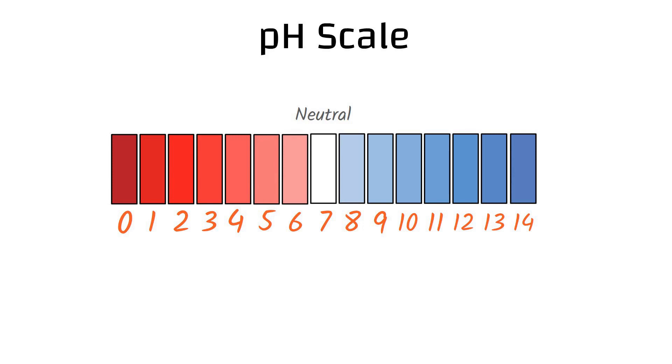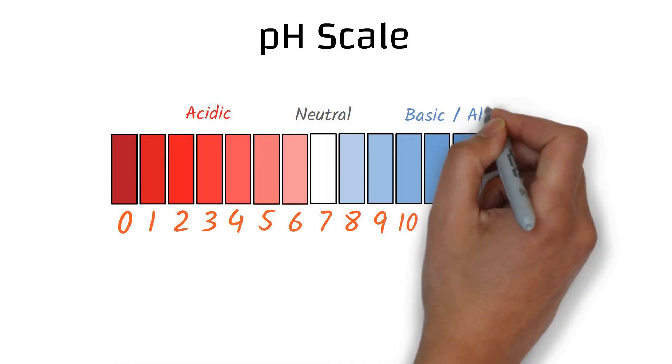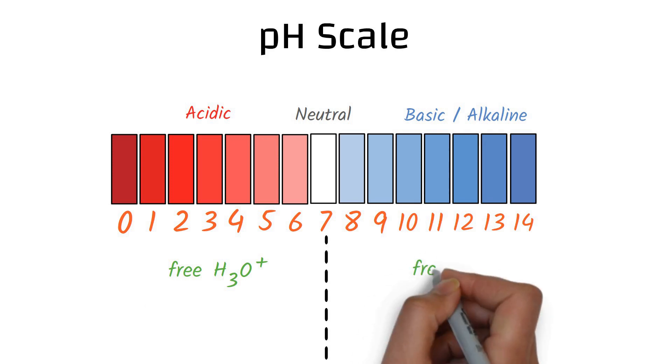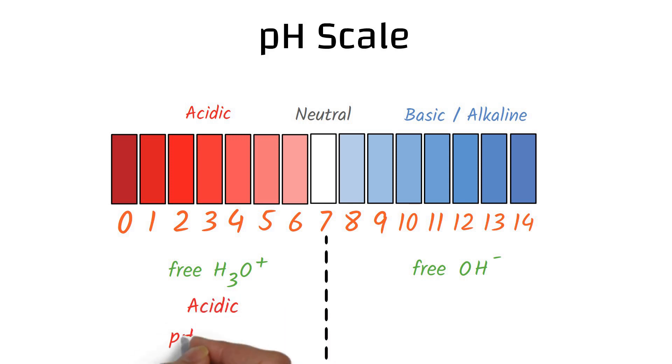pH less than 7 indicates acidic conditions and greater than 7 indicates basic or alkaline. In other words, pH is about calculating the free hydronium ions and free hydroxyl ions in a given solution. A solution with more H+ ions is acidic and gives a pH value less than 7. Similarly, a solution with more OH- ions is basic and gives a value greater than 7.